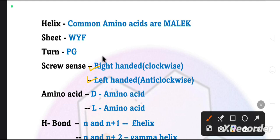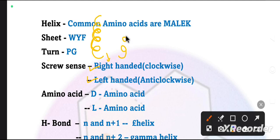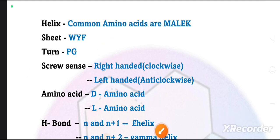If we look at the helix, we can see that it turns in a clockwise direction - this is the clockwise or right-handed alpha helix. On the other side, if it is coiled in an anticlockwise manner, it is called the left-handed helix. Right-handed helices are more common in proteins.